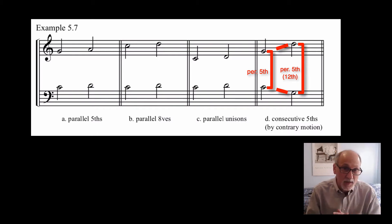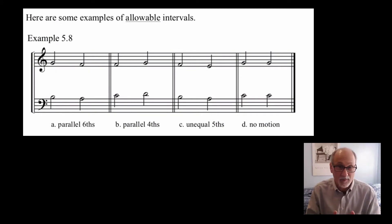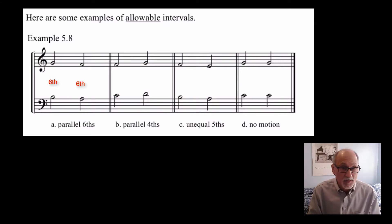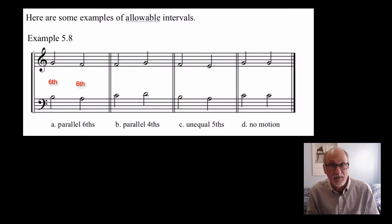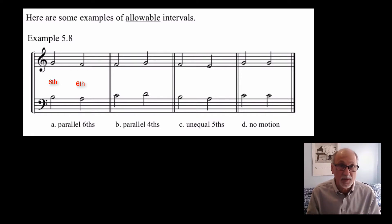Now here's some examples — this is example 5.8 — that are actually allowable. Don't worry about these things because these are perfectly fine in the music. Here's A: B and G, well that's a sixth, moving to an A and an F, which is another sixth. Those really sound quite nice. That's allowable. The only forbidden intervals are fifths, unisons, and octaves, if they're parallel.